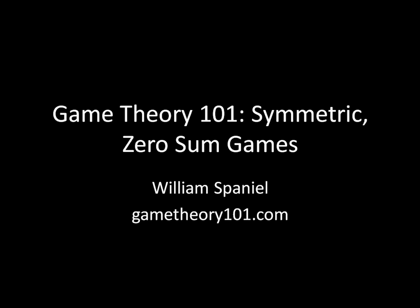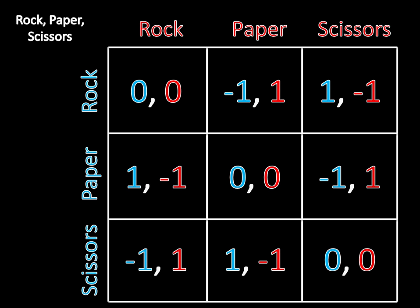Today we're going to talk about a neat little tool you can use to solve symmetric zero-sum games. You'll remember that the motivation for this is that we were looking at Rock Paper Scissors previously, a game that looked like this. We sort of guessed that the equilibrium was going to be for each player to randomize equally among all three of their strategies.